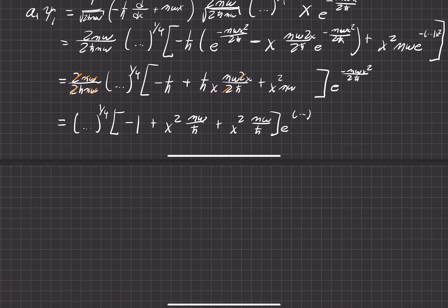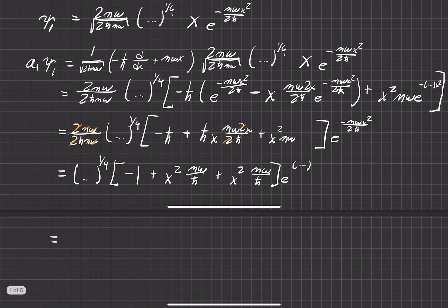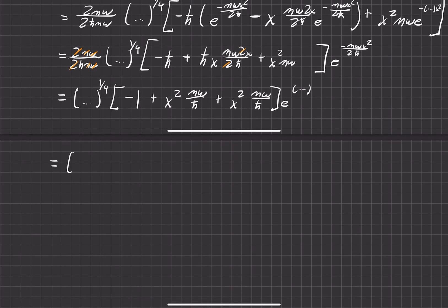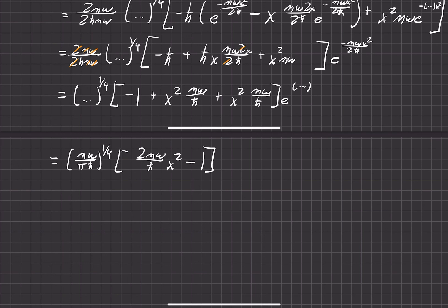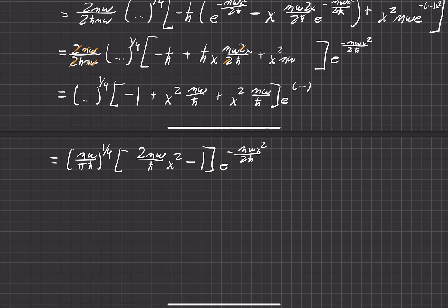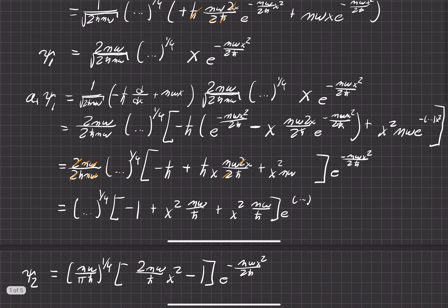Let's write everything cleanly now. We have m-omega over pi h-bar to the one fourth, then 2m-omega over h-bar times x squared minus one, times e to the negative m-omega x squared over 2 h-bar. It's important to note this x squared and this exponential will be important for the next part. In the end, this is our second excited state of the quantum simple harmonic oscillator.